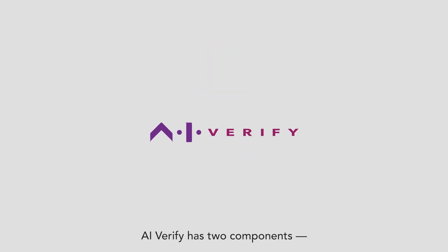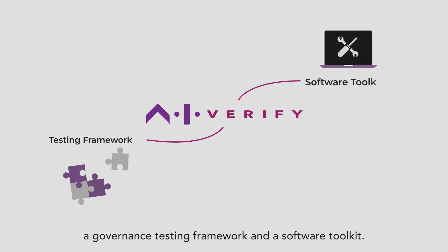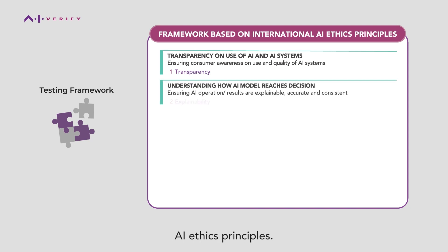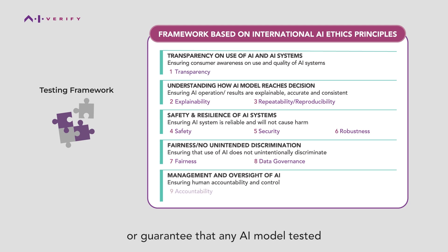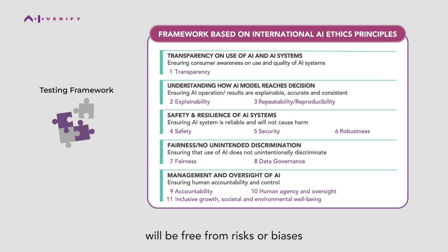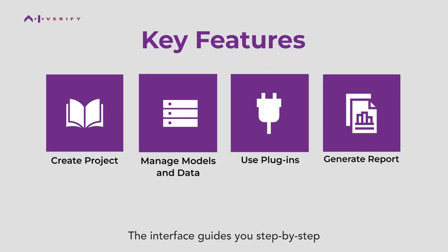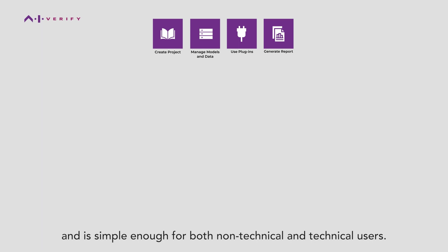AI Verify has two components: a governance testing framework and a software toolkit. The framework is aligned with 11 internationally accepted AI ethics principles. AI Verify does not define ethical standards or guarantee that any AI model tested will be free from risks, biases, or is completely safe. The interface guides you step-by-step through the testing process and is simple enough for both non-technical and technical users.